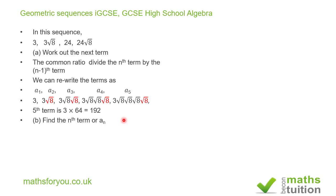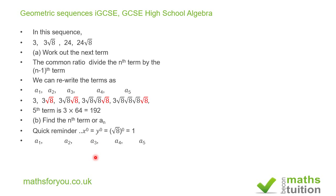Now we need to find the nth term. Before we do that, a quick reminder of what we already know: any value to the power 0 equals 1. So we can rewrite our sequence as 3 times root 8 to the power 0, because root 8 to the power 0 is 1, so 3 times 1 is 3. Then 3 multiplied by root 8 to the power 1, which is our second term. Then 3 multiplied by root 8 squared, which is our third term — because root 8 squared is 8, and 8 times 3 is 24.